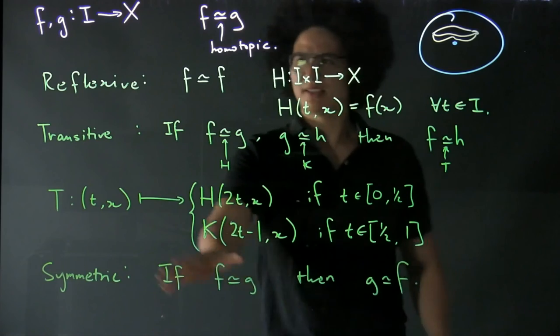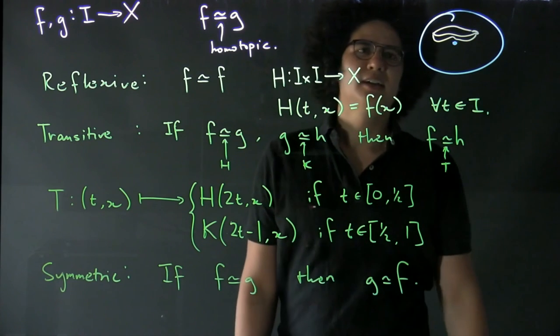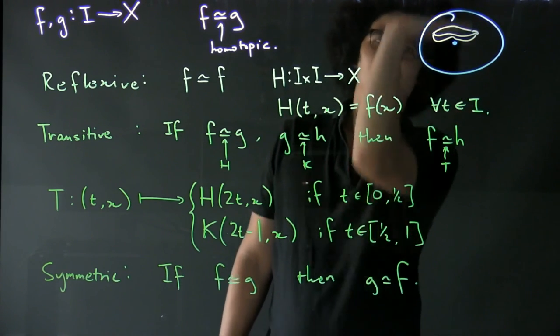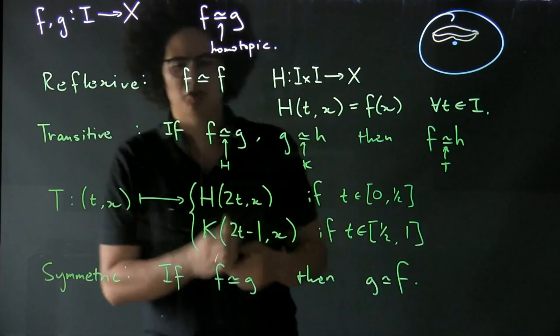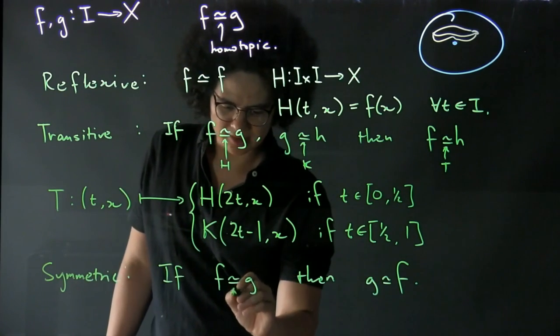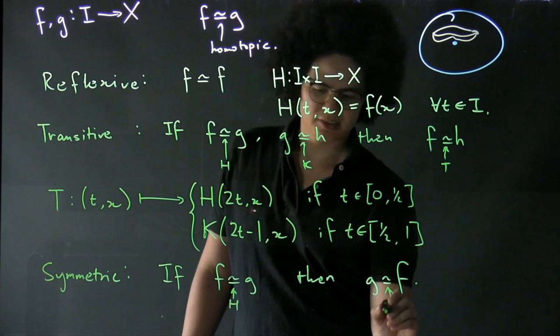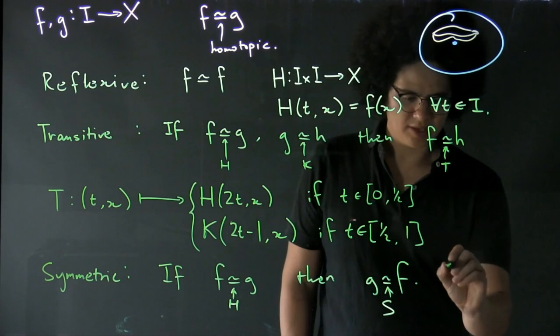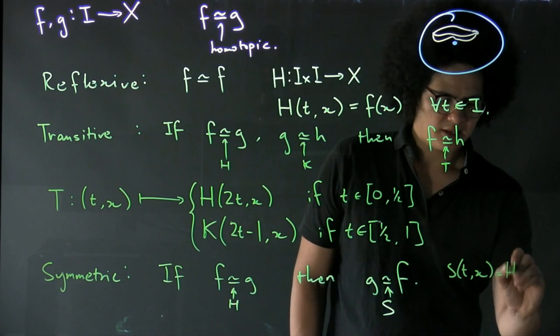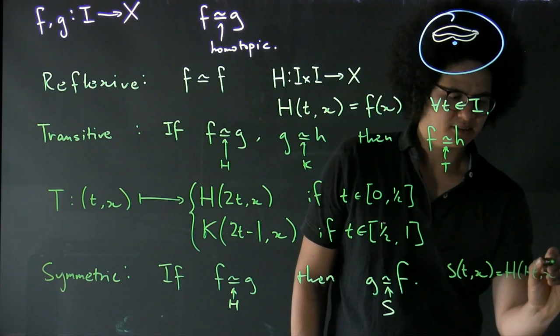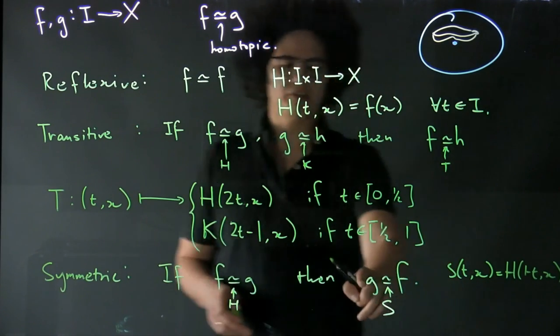So intuitively the way to see that this is symmetric is, well, I said you can deform one into the other, say the top to the middle by pushing it down. But then we can equally do the same thing backwards and push the bottom up, the middle up to the top by the same series but in reverse order. So if this is by H, I'm going to say that you want to make this by a homotopy S. S(t,x) is going to be H(1-t,x).